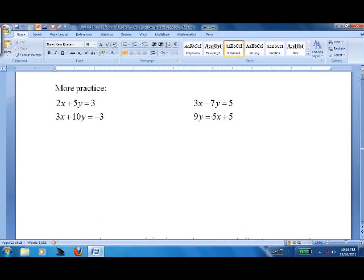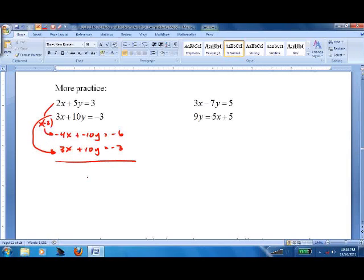So more practice. This one sets up pretty nice. Let's just multiply the top one times negative 2. Get negative 4x plus negative 10y equals negative 6. Leave the bottom one alone. Bring it down as is. We're off to the races. Negative x equals negative 9. x equals 9.